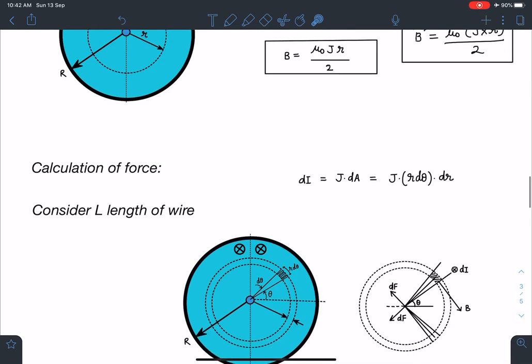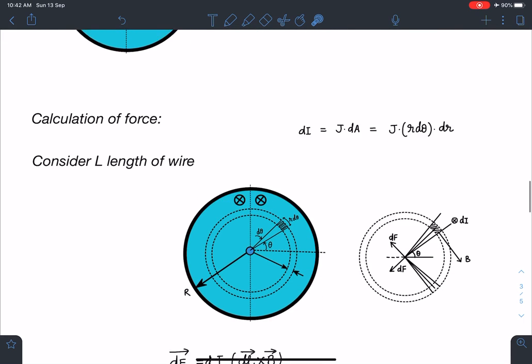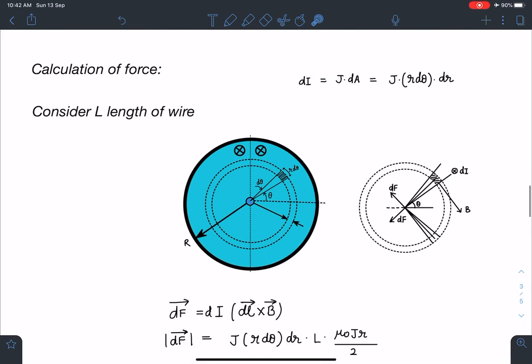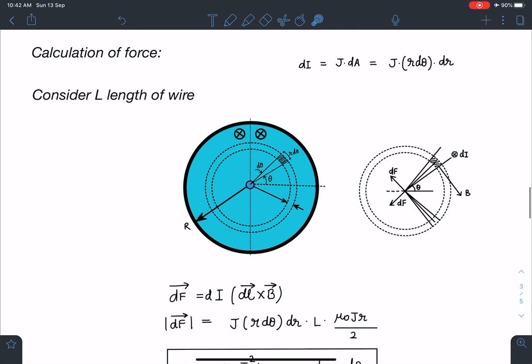Now in order to calculate this force, what I have to do is I am going to take a cylindrical shell inside this, radius of this is r and thickness is dr. So if I take a small wire, and I am considering L length of the wire, that means into the plane length of this cylinder is L, and which is large enough, I am taking that wire.